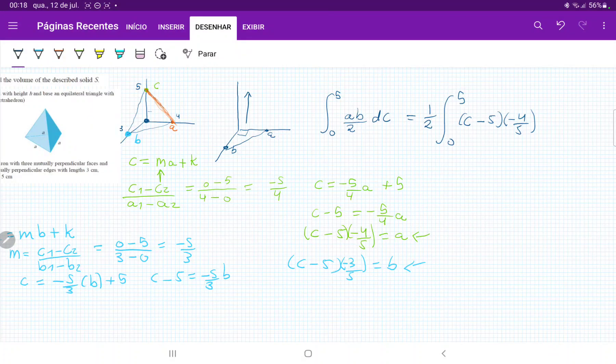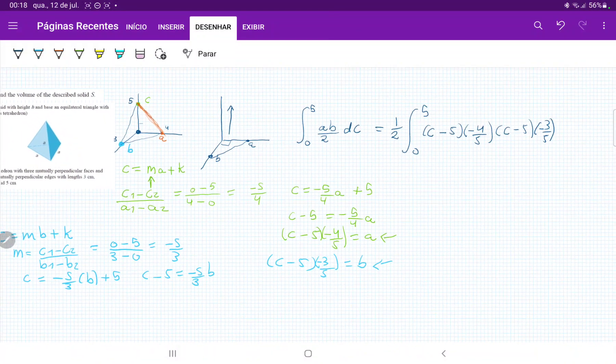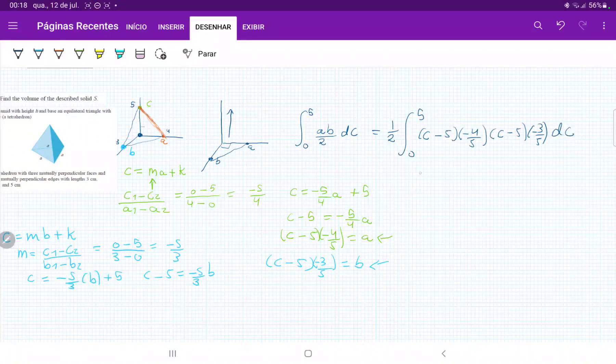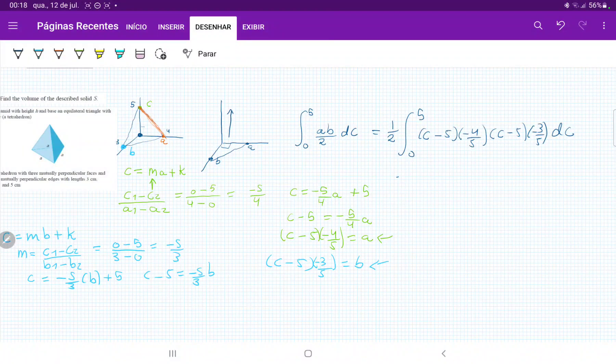So we have here C minus 5 times minus 4 fifths. And then whenever we have B, we're going to use this equation here. And then we're going to have C minus 5 times minus 3 over 5, and all of this times DC. Now we have all these variables in terms of C. We are ready to integrate.